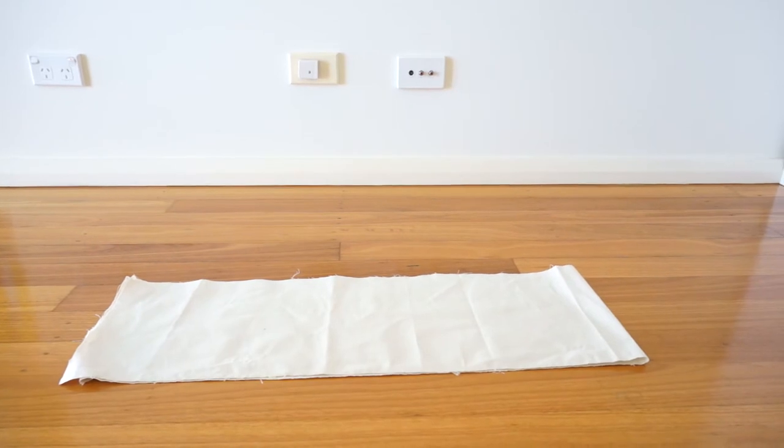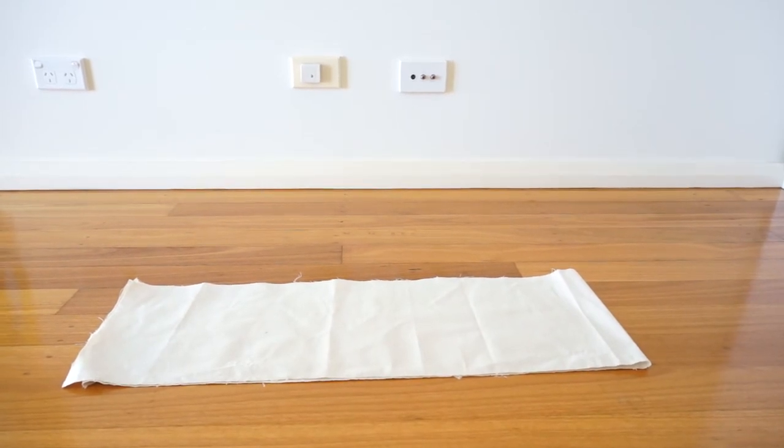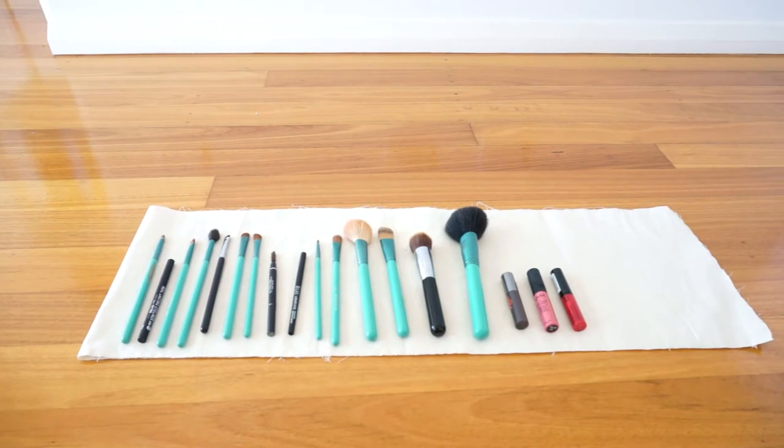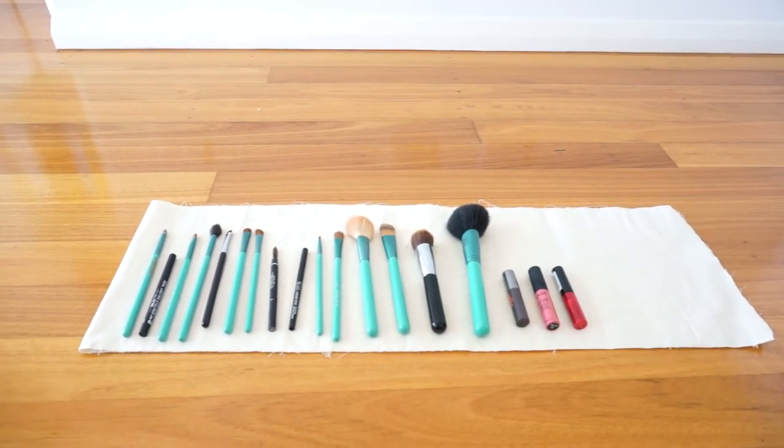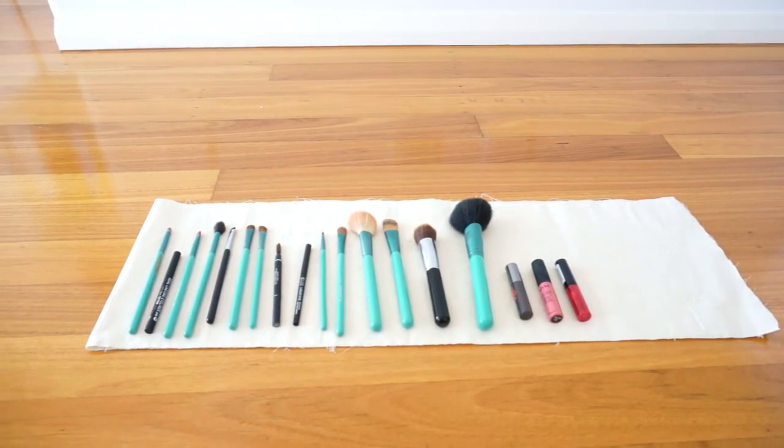So first, the materials. You will need a 25cm wide piece of fabric. The length is your choice. I laid out my makeup brushes to see how long I wanted the fabric to be and then measured an extra 15cm at the end.